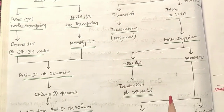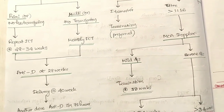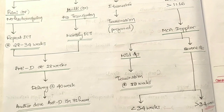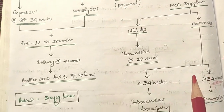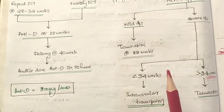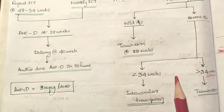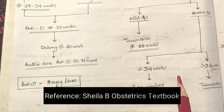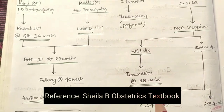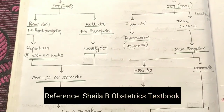This is the concise flowchart for management of RH incompatibility, written from Sheila B's obstetrics textbook. The flowchart is presented as given in the textbook.